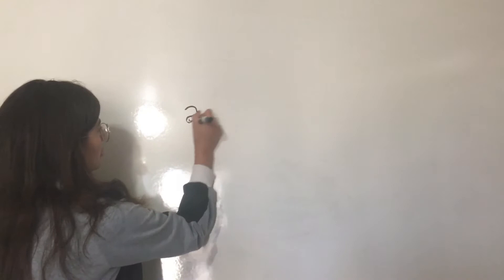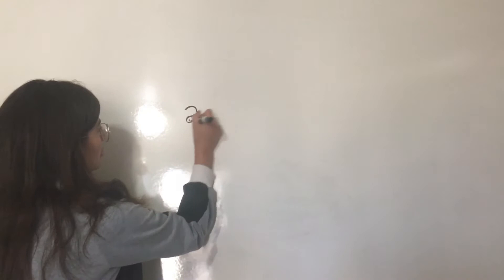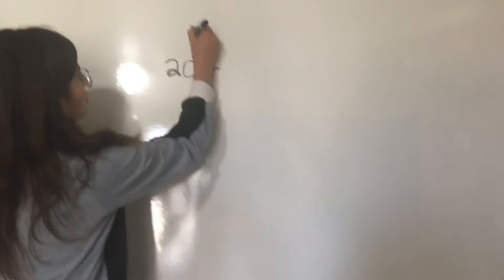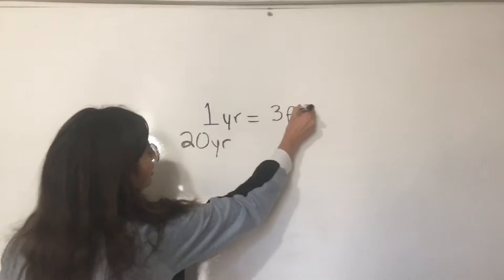So we have 20 yards, but we want feet. So first we have to think, how many feet are in one yard? One yard equals three feet. And this is something you guys should know. One yard equals three feet.